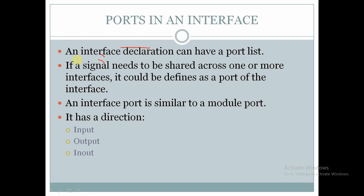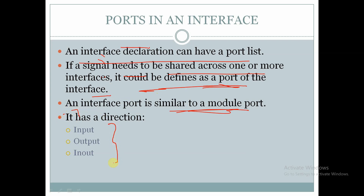Ports in an interface: an interface declaration can have a port list. If a signal needs to be shared across one or more interfaces, it could be defined as a port of the interface. An interface port is similar to a module port and can be of three directions: input, output, or inout. For example, a clock signal should be shared by all interfaces, so it can be declared as an interface port.